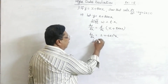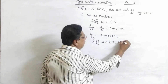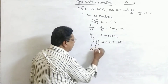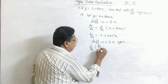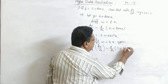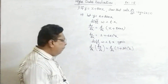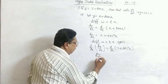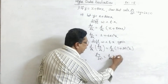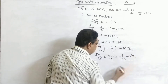Now differentiate again with respect to x. The derivative of dy/dx is d²y/dx². On the right hand side, take d/dx of (1 + sec²x). Take the derivative of 1 plus the derivative of sec²x.